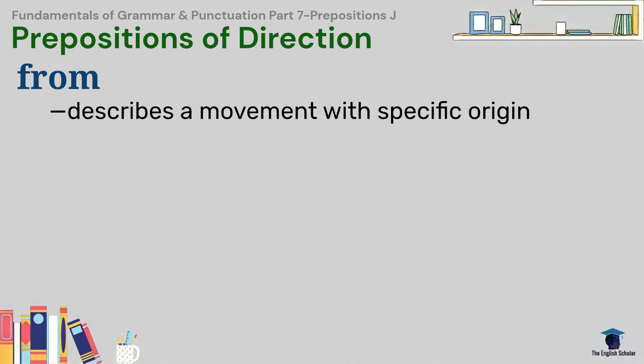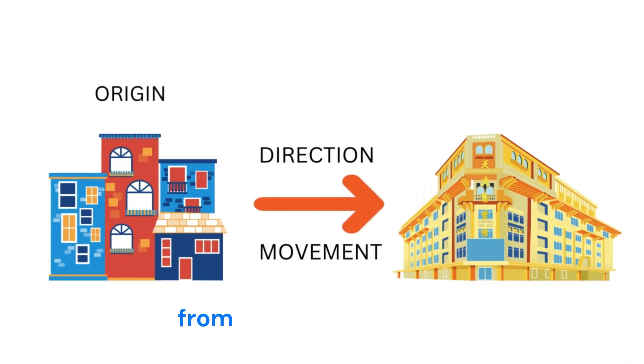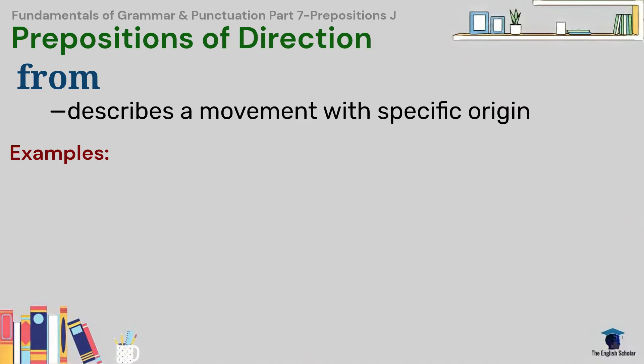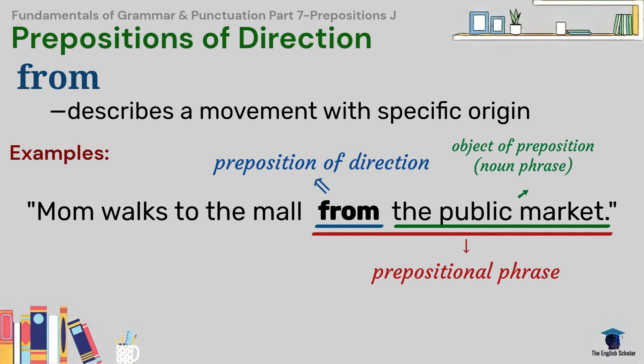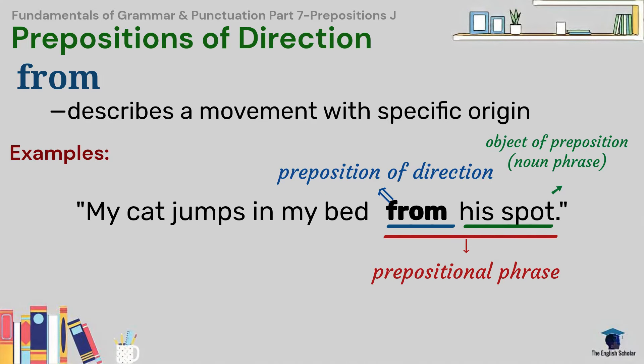From describes a movement that has a specific origin, meaning it states from which place it came. Example: Mom walks to the mall from the public market. My cat jumps in my bed from his spot.